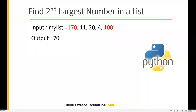Hi everyone, welcome. In this video I am going to show you how to find the second largest number in a list. Let's have a list which contains some elements: 70, 11, 24, and 100. So 100 is the largest number and 70 is the second largest number. Now how can we find it through a Python program?